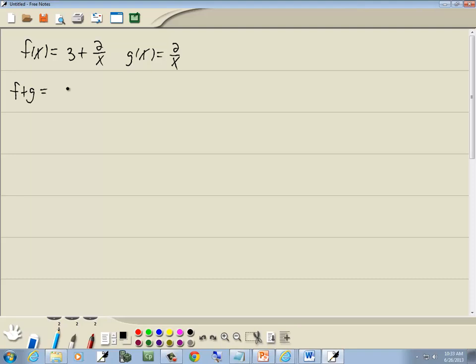First thing we want to find is f plus g. So we'll put parentheses around each function and put a plus between them. Now in this case, these parentheses aren't doing anything. And I notice that this has the same denominator as that. Since these both have x as a denominator, we can add together the top parts.